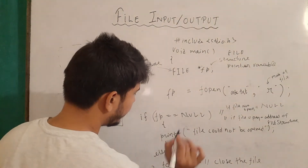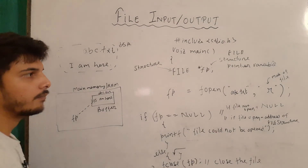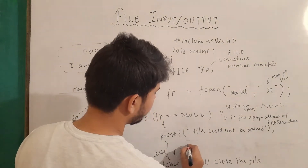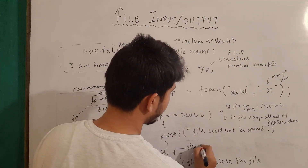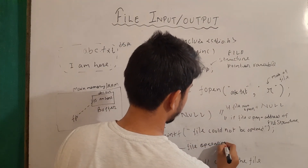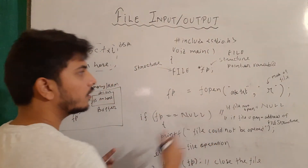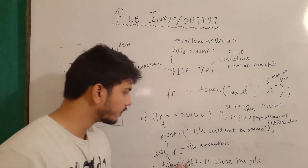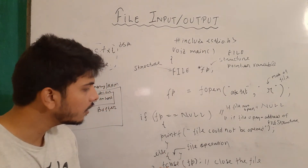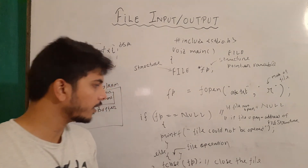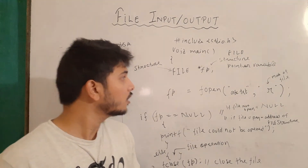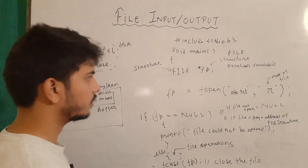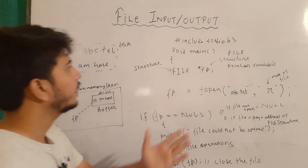Inside the else block, we perform our operation — whether we want to read, write, or append the file. The fopen line is one file operation (opening the file) and the fclose(fp) line is another file operation (closing the file). This is the general structure we will always use whenever we are doing file operations, so remember everything written here.